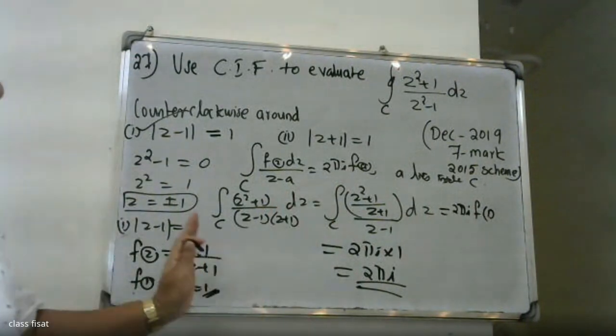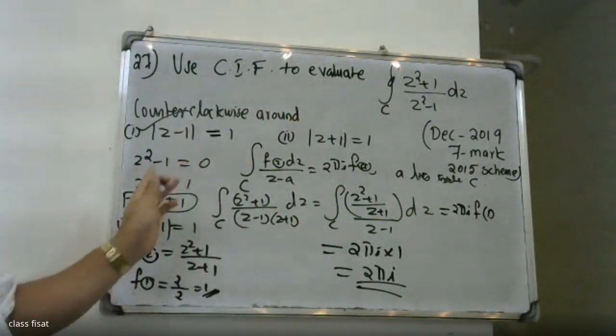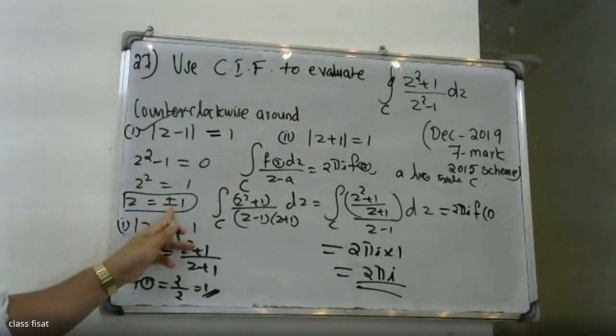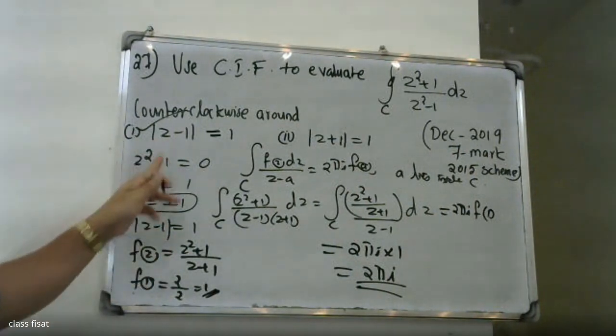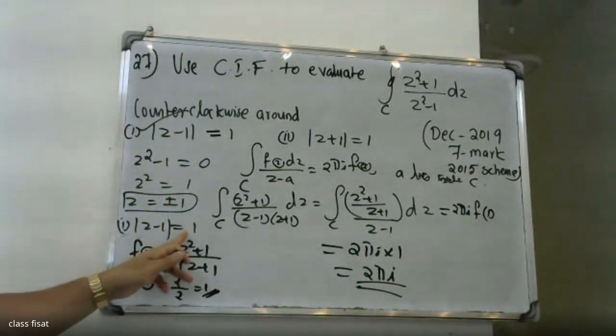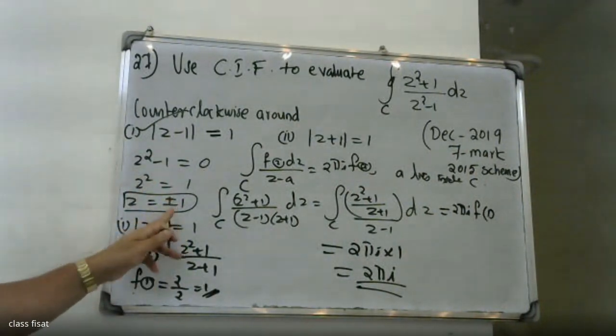For the second region, the singular points are again z = ±1. We check which lies inside for the contour |z + 1| = 1.